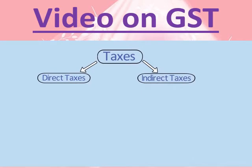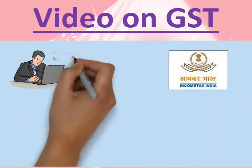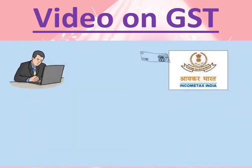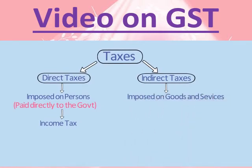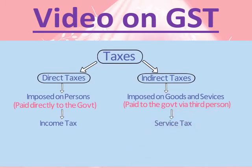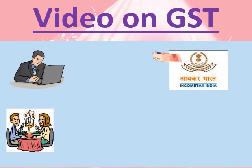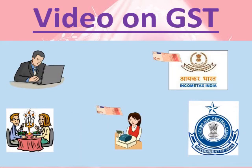Taxes can be divided into two broad categories: direct taxes and indirect taxes. Direct taxes are imposed on a person and paid to the government by the taxpayer himself — for example, income tax. If there is a liability of income tax on any person, he pays it directly to the government. Indirect taxes are imposed on goods and services and paid indirectly to the government via a third person — for example, service tax. When you dine out in a restaurant, you pay service tax included in the bill to the restaurant owner, who then pays that portion to the government.